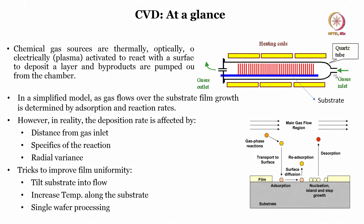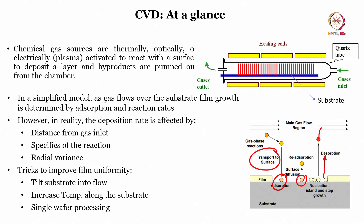When gas phase reaction occurs, the steps are: transport to the surface, adsorption on the surface, surface diffusion, re-adsorption, nucleation and step growth, and finally desorption — where by-products exit. In a simplified model, as gas flows over the substrate, film growth is determined by adsorption and the reaction rates.